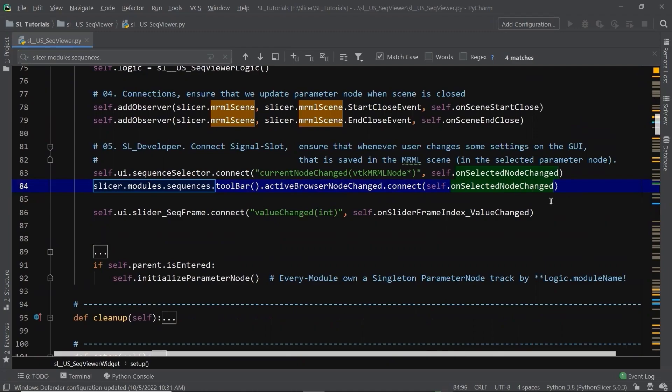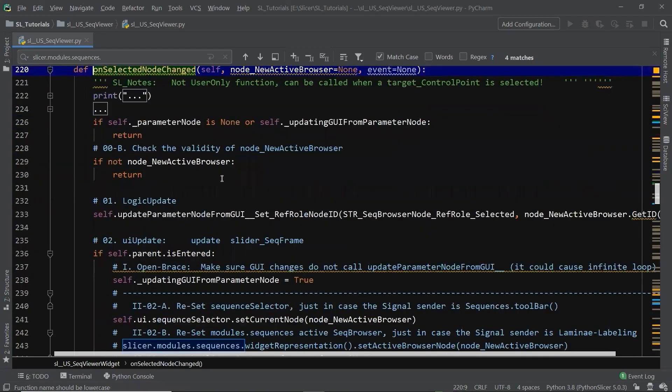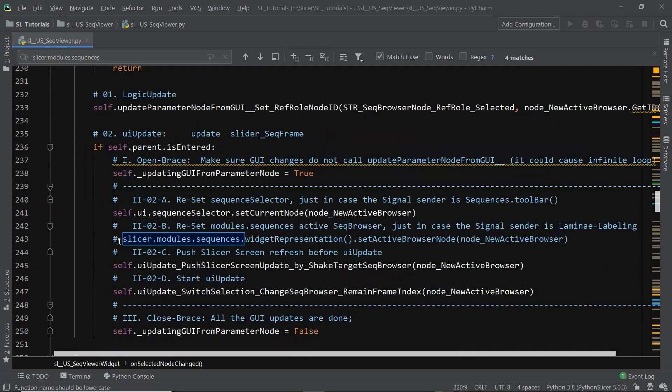Reset the active Sequence Browser node for the Sequence Viewer in the module sequences given by 3D slicer. In this way, the module will update the active Sequence Browser node for two times if we change the drop-down list, and will not cause infinite loops,